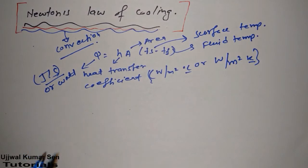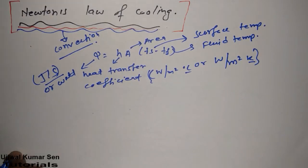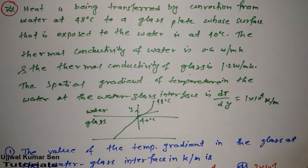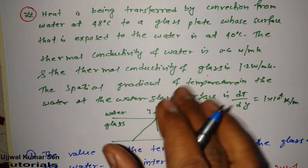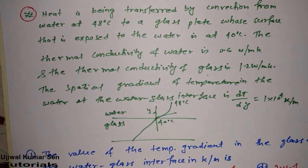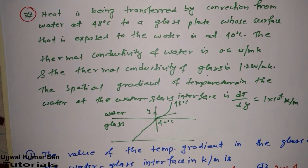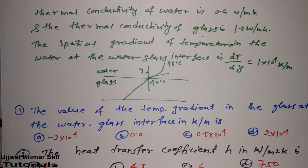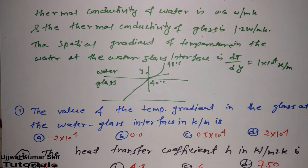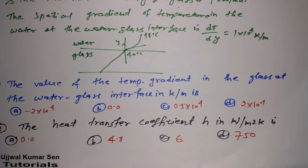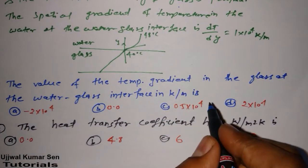Now let's learn the numerical problem which has been asked in GATE previous year paper for four marks. Here is the question in front of you — it seems to be a really lengthy question. We are having two questions, each of two marks. I think this question has been asked in GATE 2003. The first question asks for the value of temperature gradient in the glass at the water-glass interface in kelvin per meter.